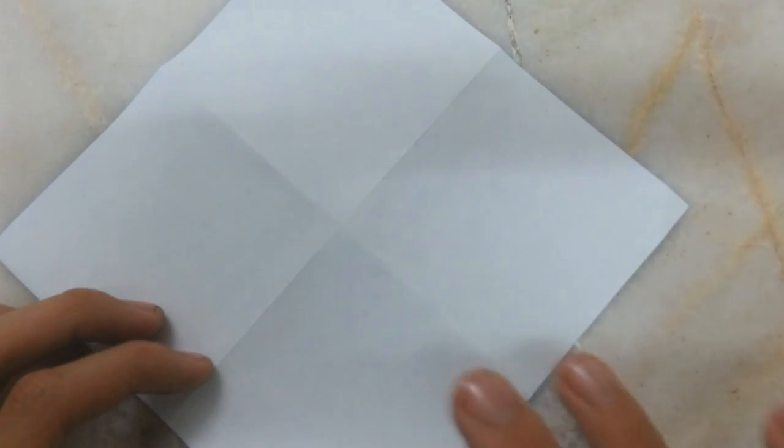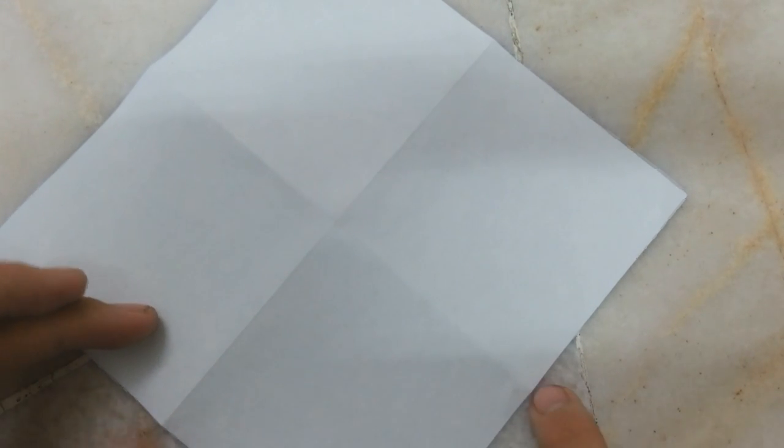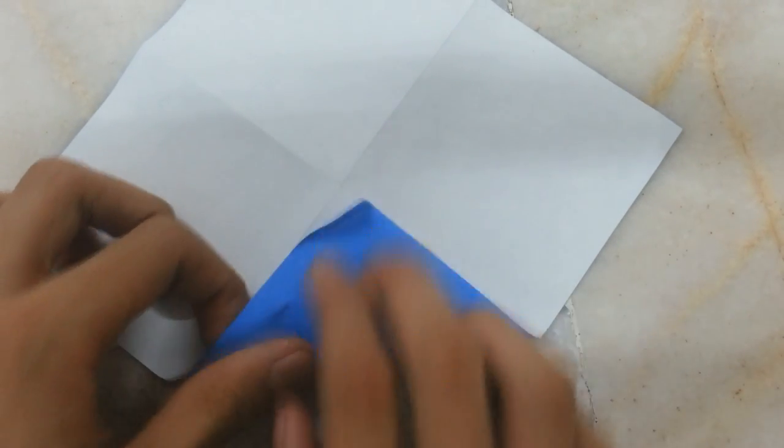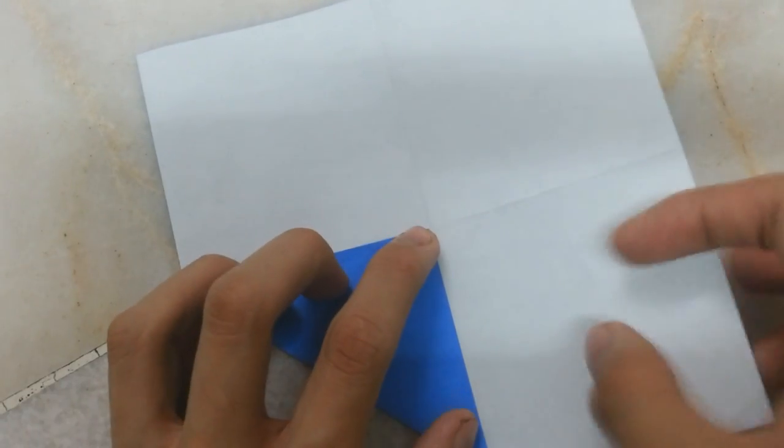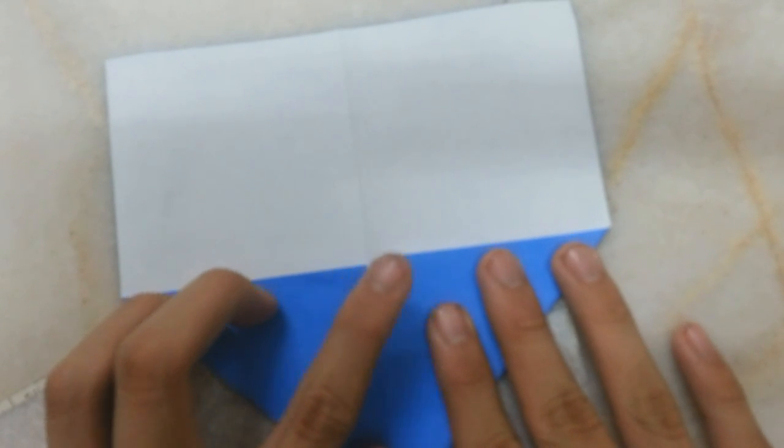Fold the corner to the center point and making a crease at these two points. Just fold it to the center point. Do the same thing on all three sides.